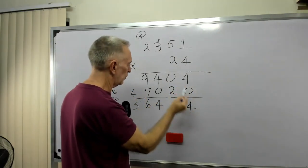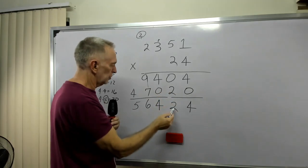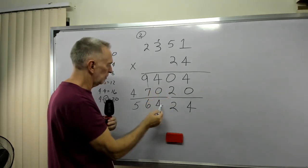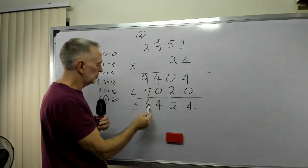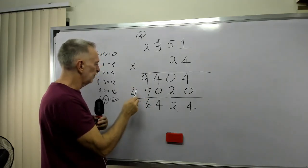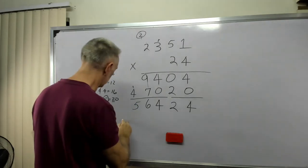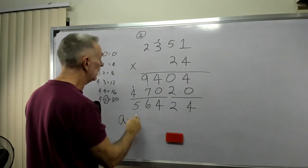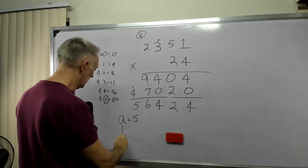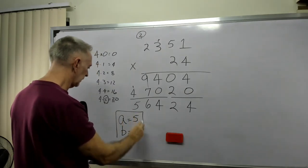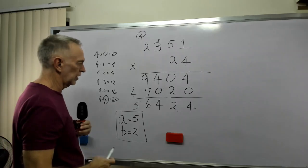4 plus 0 is 4. 0 plus 2 is 2. 4 plus 0 is 4. 9 plus 7 is 16. Carry the 1. 1 plus 4 is 5. So, in this case, A equals 5. B equals 2. And that was the solution we're looking for.